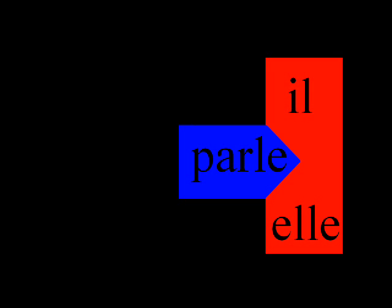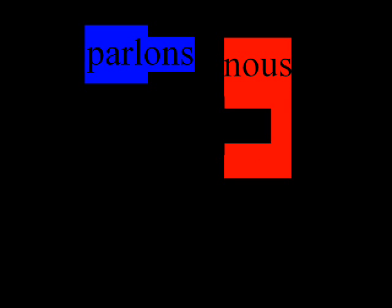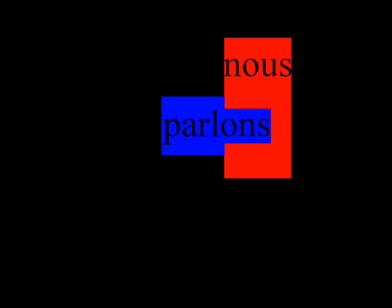Let's take a look now at nous. We are faced with the same problem — we need to make the puzzle pieces fit together, or in other words, we need to conjugate them. Does it look like parlons, in the bleu, will be able to fit inside of nous in the rouge? Boop! Yup. This shouldn't surprise us, because just like the ONS on parlons made it fit into nous, we always need an ONS on our verb if we are using nous.